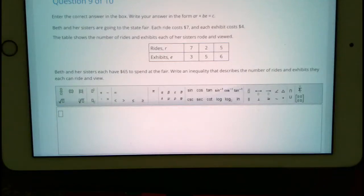Beth and her sisters are going to the State Fair. Each ride costs $7 and each exhibit costs $4. The table below shows the number of rides and exhibits each of her sisters rode and viewed.